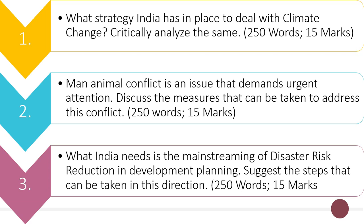The second question is: man-animal conflict is an issue that demands urgent attention — discuss the measures that can be taken to address this conflict. As the population is expanding and habitat loss of animals is happening, man-animal conflict has become frequent in India. The word limit is 250 words and the maximum marks are 15.